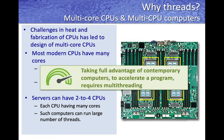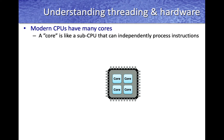Modern desktop and server processors have more than 28 cores, meaning we can utilize 28 small CPUs simultaneously to solve complex problems. Modern servers can have multiple CPUs, each with multiple cores, where a core is like a smaller CPU inside the larger CPU. In order to utilize these computers with multiple cores and CPUs, programs now need to be multi-threaded to take full advantage of modern hardware architectures.